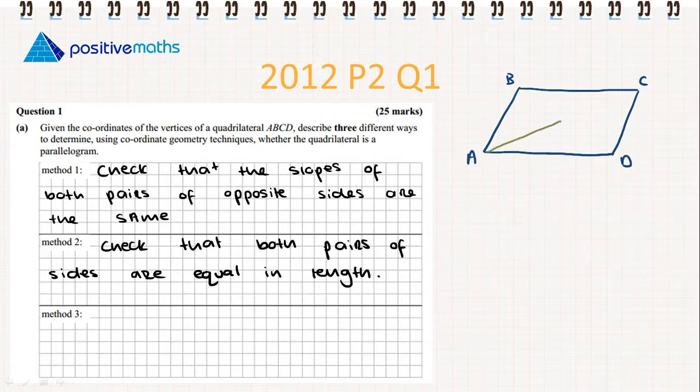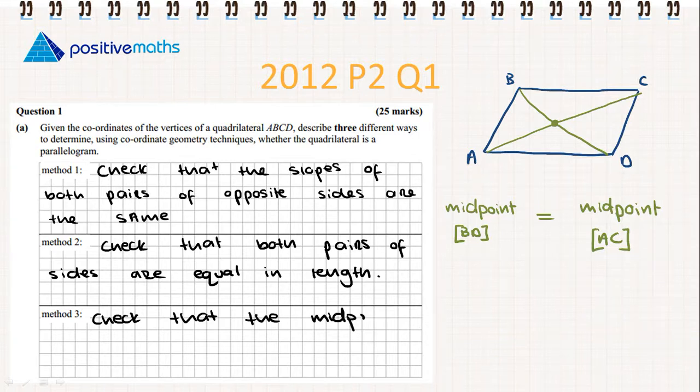The next method involves the diagonals. We'll draw them in - AC and BD. What we want to show is that the midpoint of diagonal AC and the midpoint of BD are the same point. We want to show that the diagonals bisect each other. Find the midpoint of BD and show that it equals the midpoint of AC.